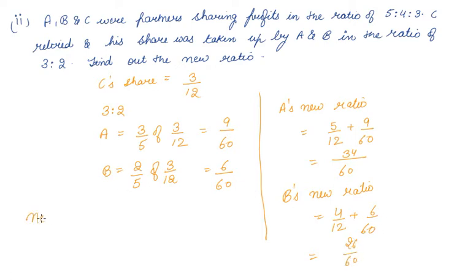Therefore, the new ratio of A and B would be 34:26. You can further reduce it to simplest form, that is 17:13. So this is the new ratio of A and B after C retires.